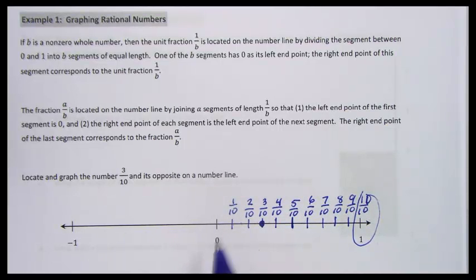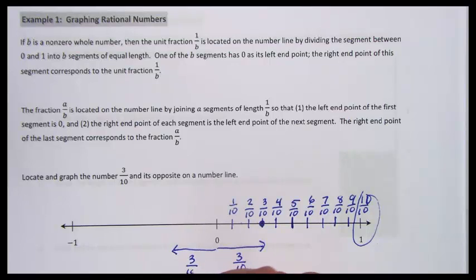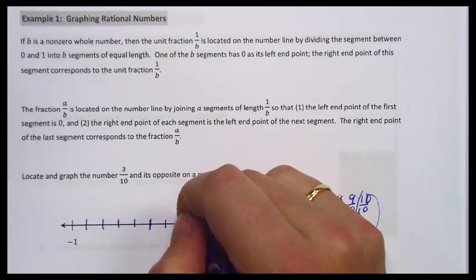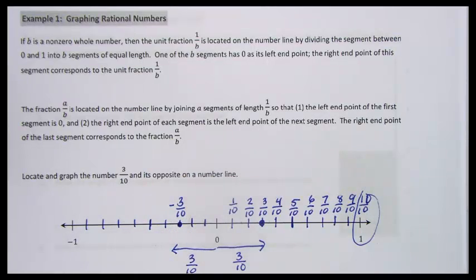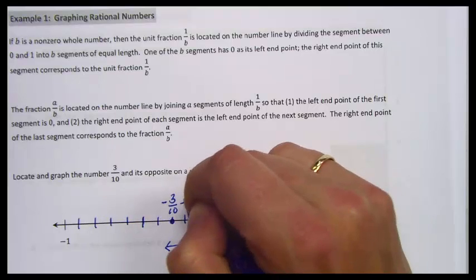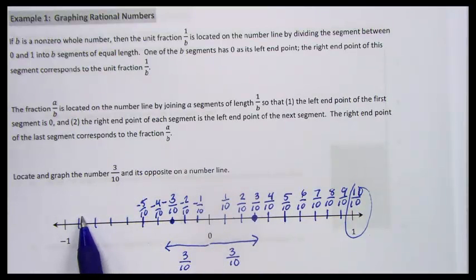If we want to find the opposite of three-tenths, we went three-tenths to the right, so to find its opposite we need to go the same distance but in the opposite direction — three-tenths to the left. We divide the left side into ten equal segments and count over three segments to the left: one, two, three. This is negative three-tenths, its opposite. Our numbers go in opposite order when we're going negative — we start with the number closest to zero and move out.